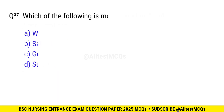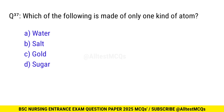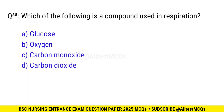Question No. 37: Which of the following is made of only one kind of atom? The correct option is C: Gold. Question No. 38: Which of the following is a compound used in respiration? The correct option is A: Glucose.